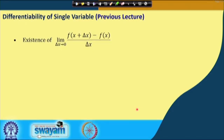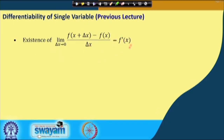There were three concepts used to define the differentiability of a function of single variable. The first was the existence of the derivative: if the limit of [f(x + Δx) − f(x)] / Δx exists, we call it the derivative f′(x). If this derivative exists, we call the function differentiable.